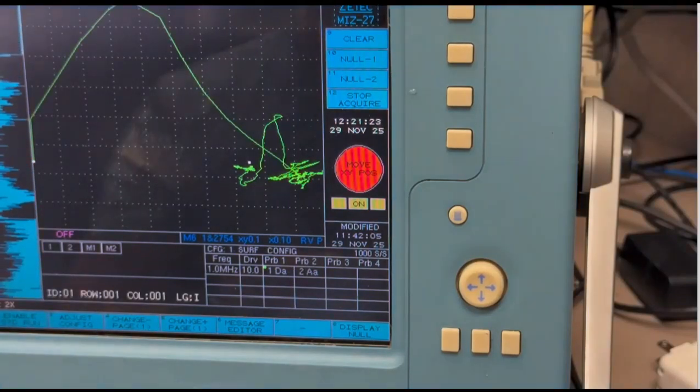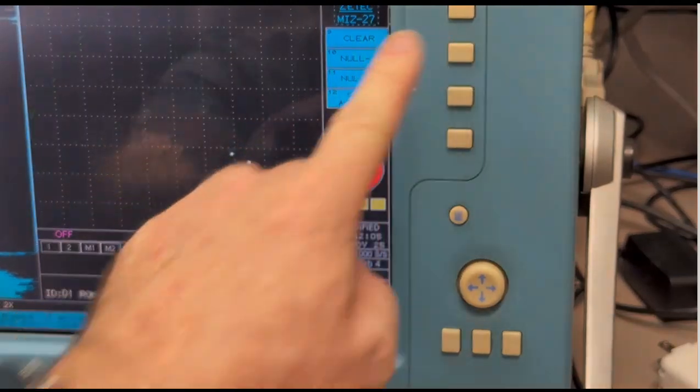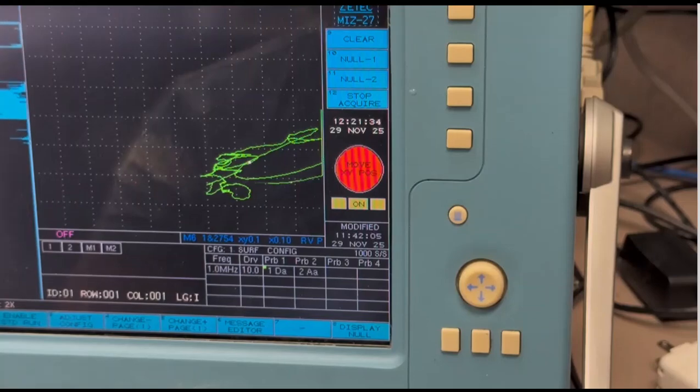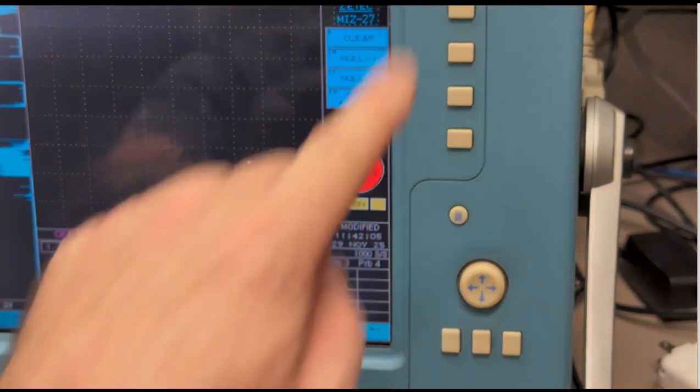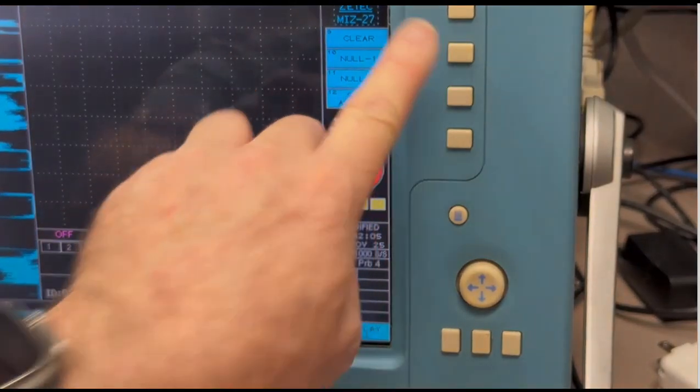That'll really make it interesting. We're going to double that over. So now we've got four thicknesses of Reynolds wrap. And it's not that pretty, but let's see here. Let's try to re-null again.